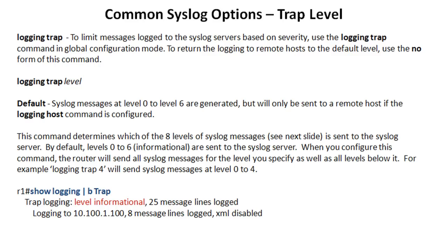What is important to understand is that when you set the logging trap level, you're turning the trap level on for the level that you specify and all levels below it. So if you configure logging trap five, you're not only sending traps that are level five — you're also sending traps that are four, three, two, one, and zero.